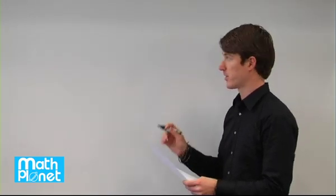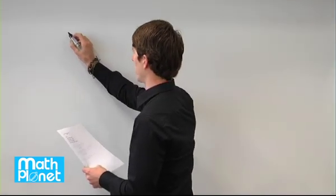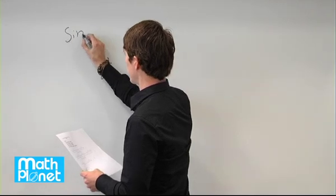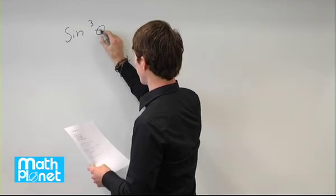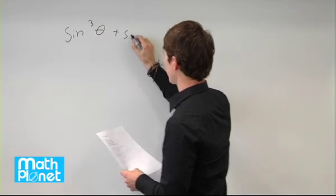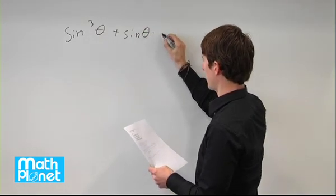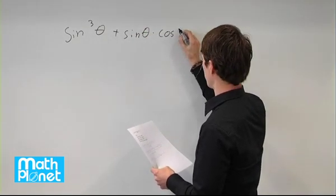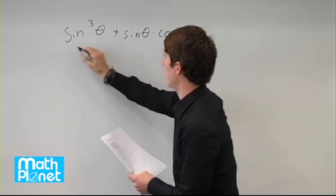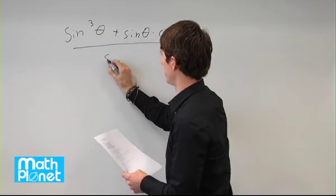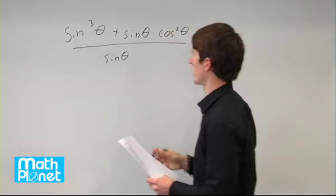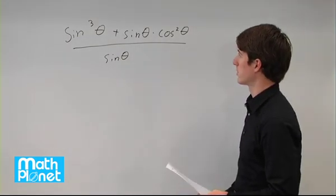We want to see what we get if we have this expression, if we can simplify it at all. We have sine cubed of theta plus sine theta times cosine squared theta all over sine. So we want to simplify this a little bit and see what we can reduce it to.